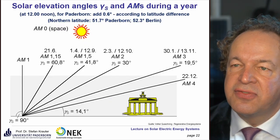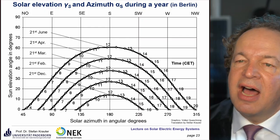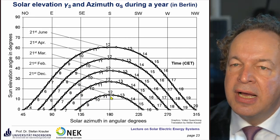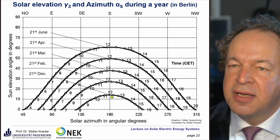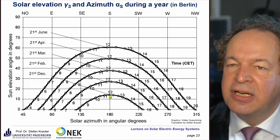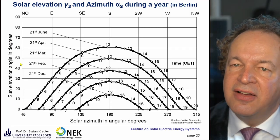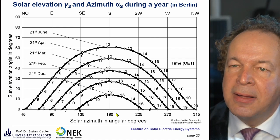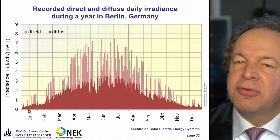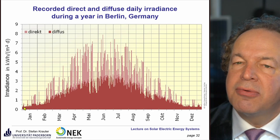If you plot this for a whole year, you get a graph starting with winter at the 21st of December. At midday in Berlin, we have a sun elevation angle of 14.1 degrees. The sun elevation angle gamma_s is in degrees, and the solar azimuth shows that at midday the sun is directly in the south position.